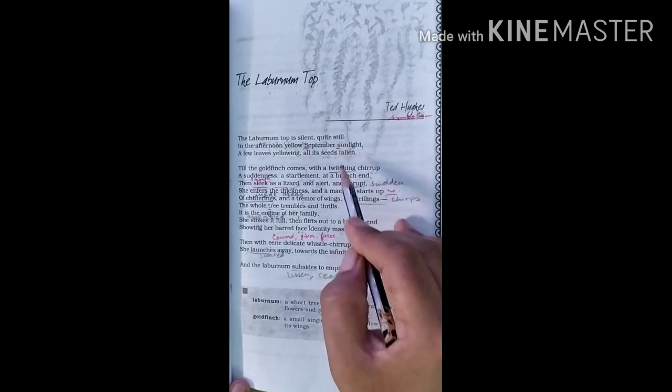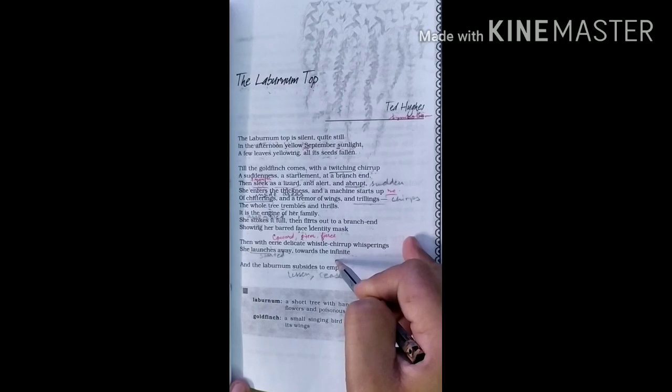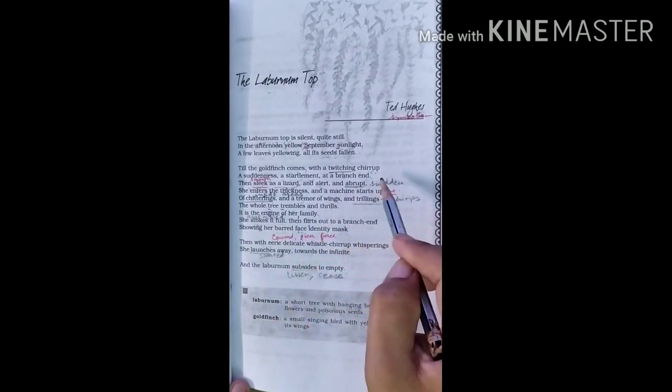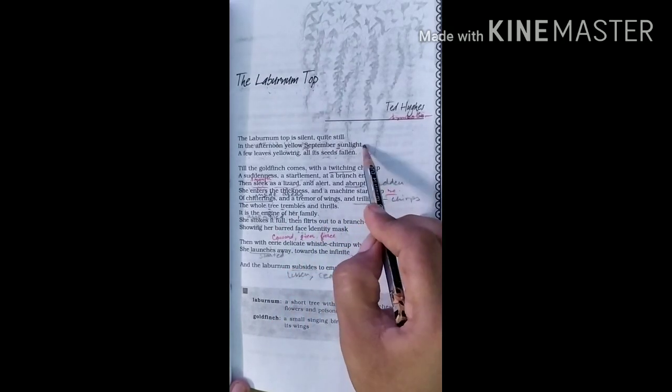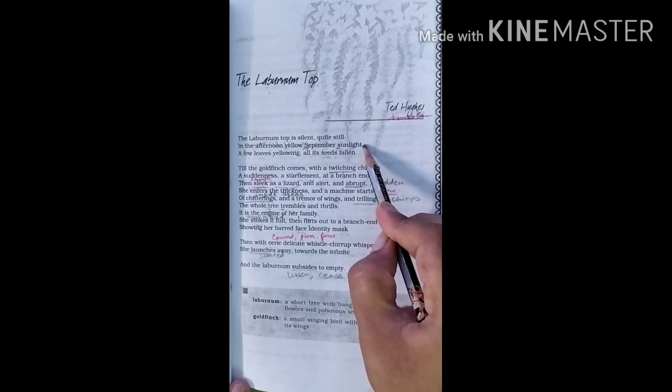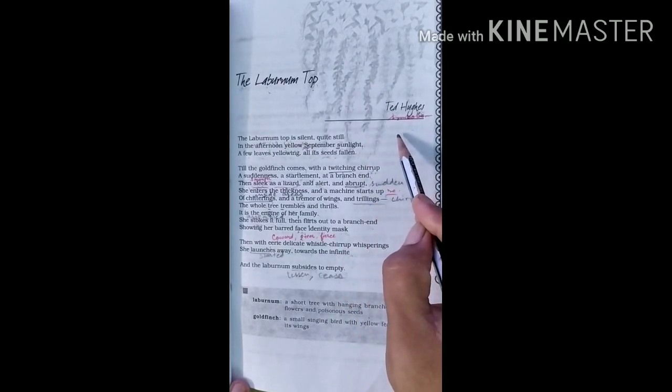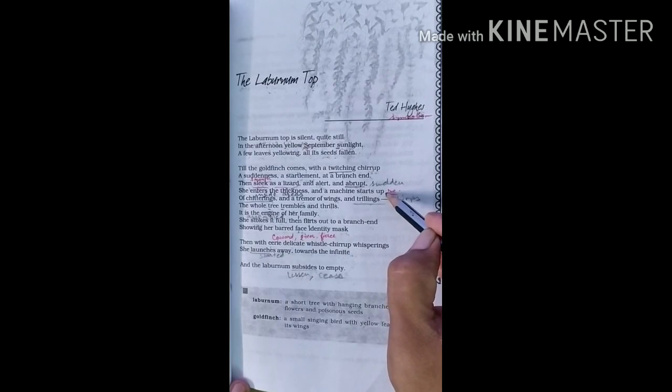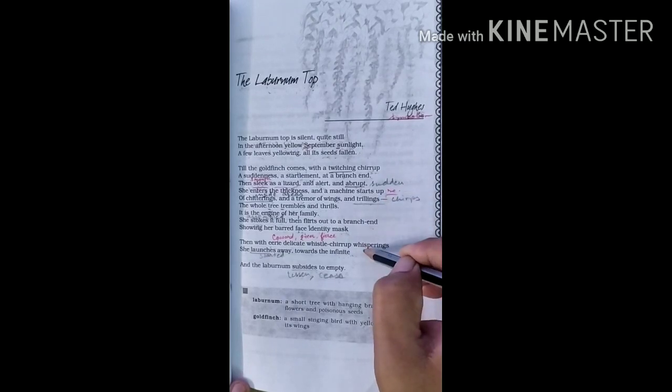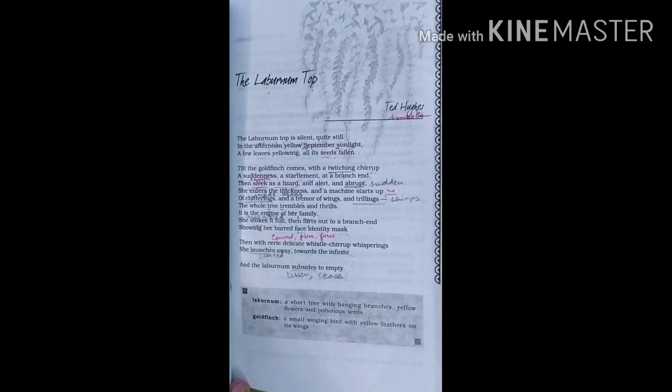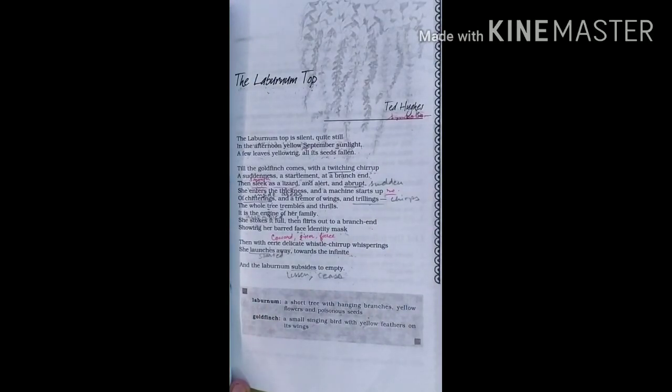The poem has been divided into three stanzas. There is no set rhyme scheme. The first stanza describes the tree before the bird reaches it. The second stanza describes the coming of the bird, and the final stanza tells the condition of the tree when the bird goes away. So let us read the poem first.